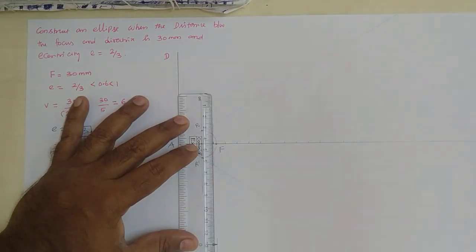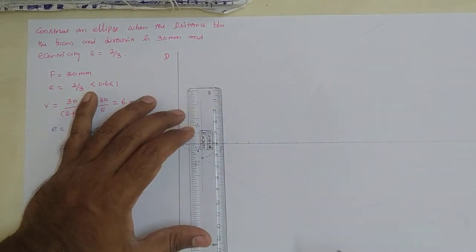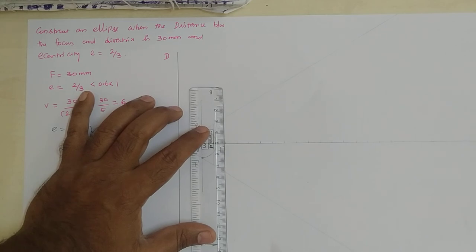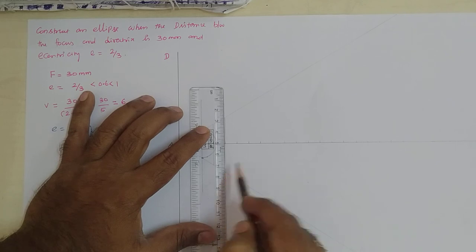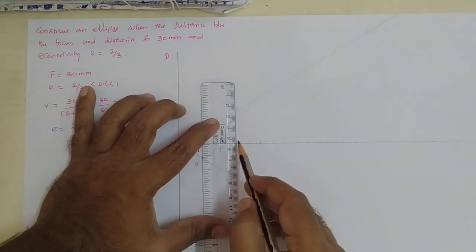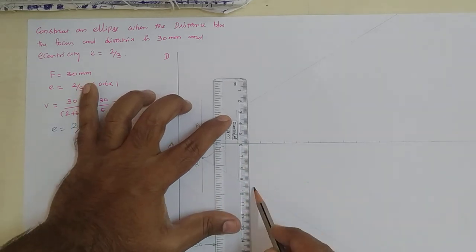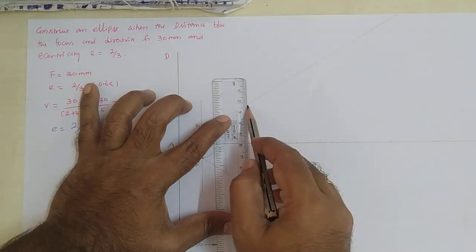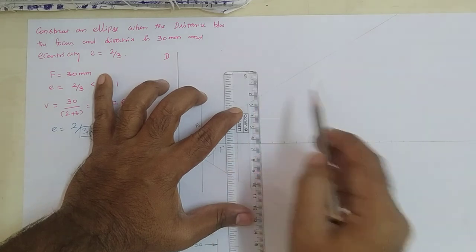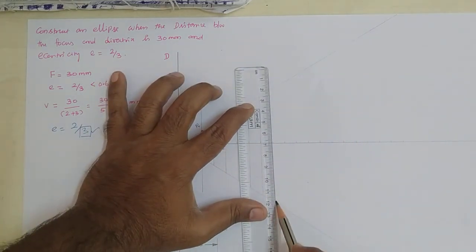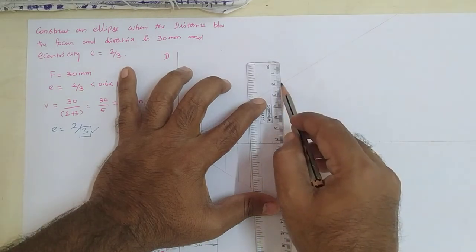I draw the lines intersecting with the inclined lines. The procedure is that lines are to be parallel to each other. I am drawing the light lines parallel to each other. You can see here — I am drawing the light lines.